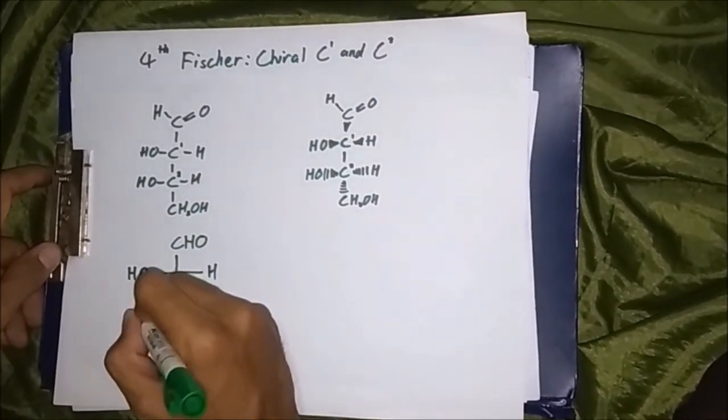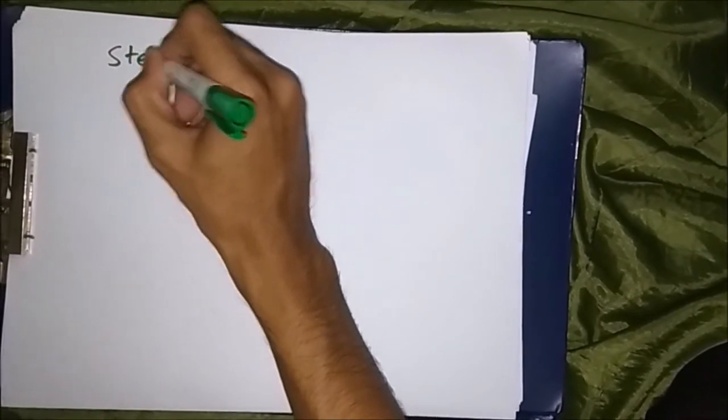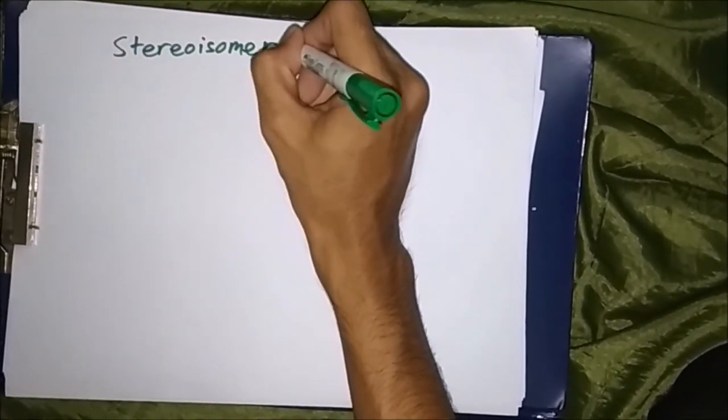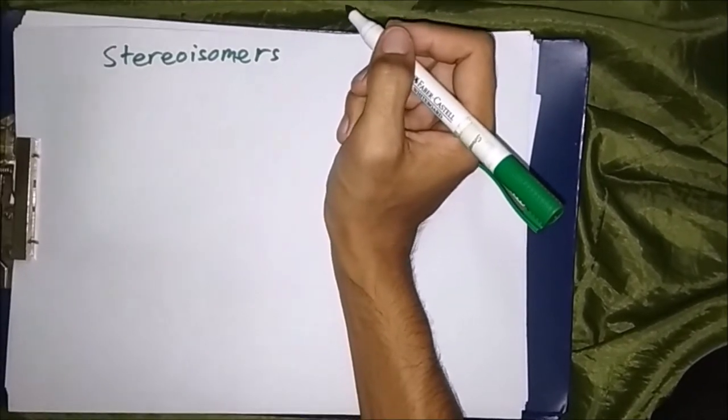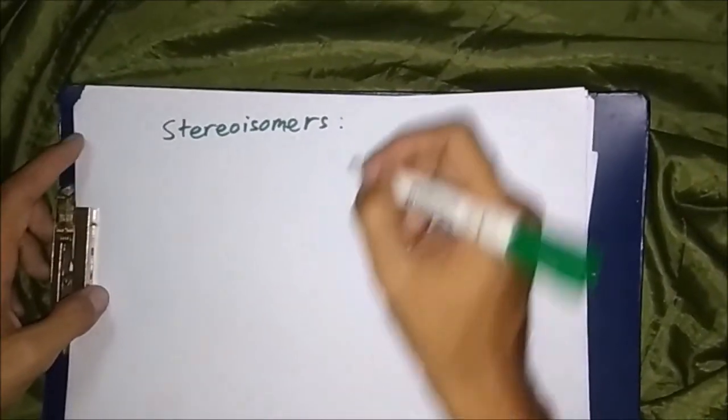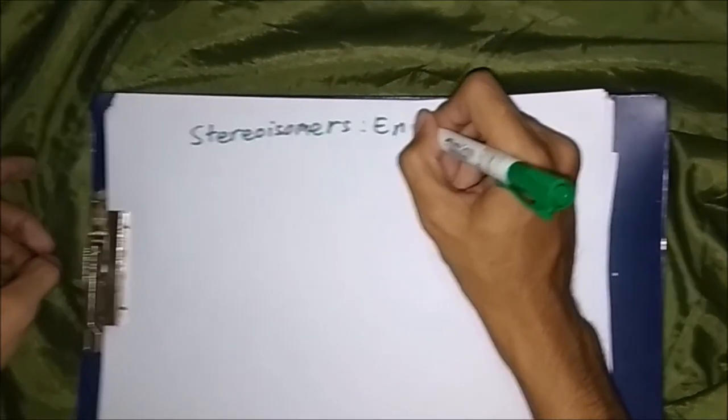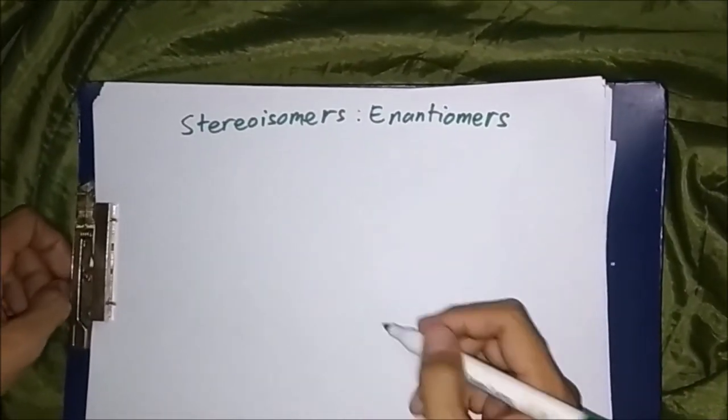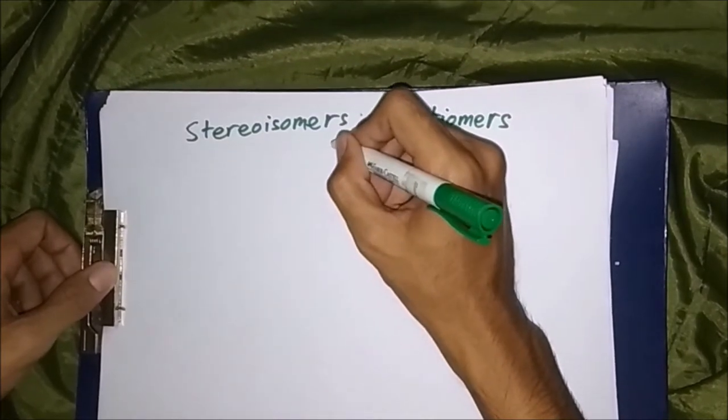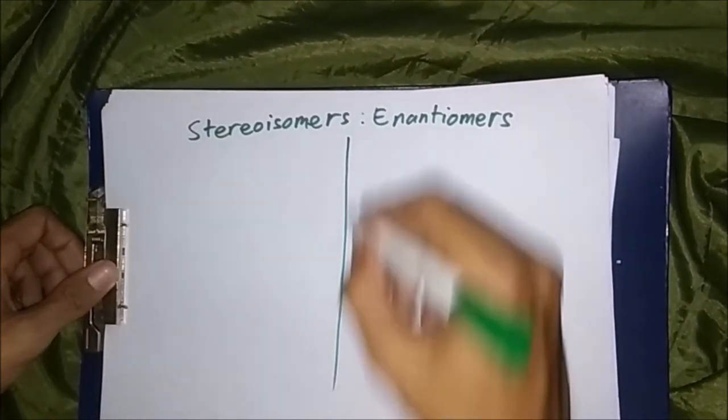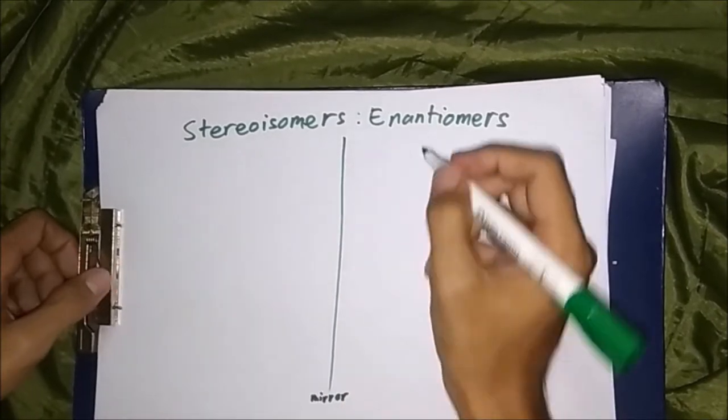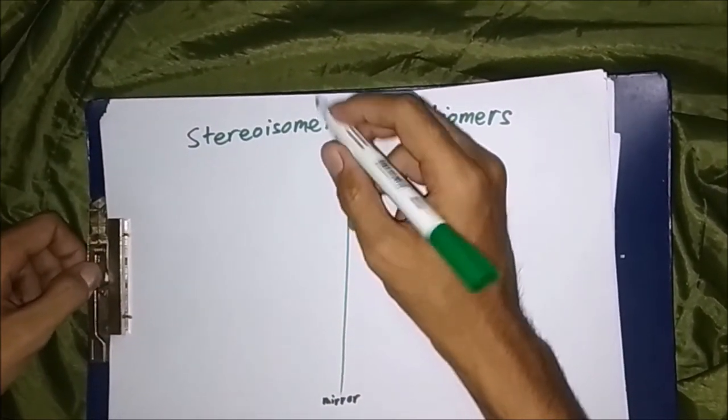And now we go on to stereoisomers, which are enantiomers. Enantiomers are Fischer projections that could be rotated by 180 degrees. This is because orientation of bonds relative to one another can change, thus converting a molecule to its partner.